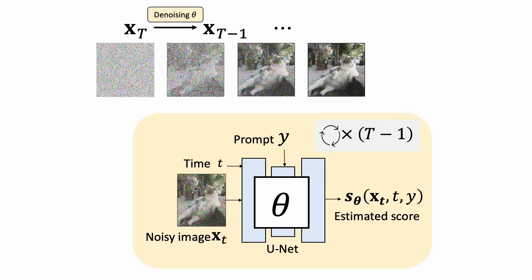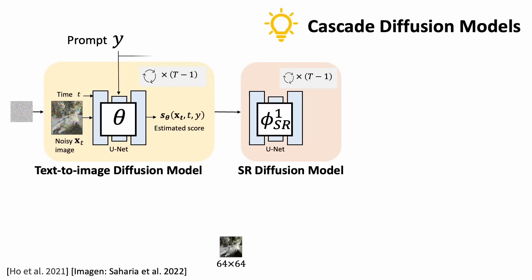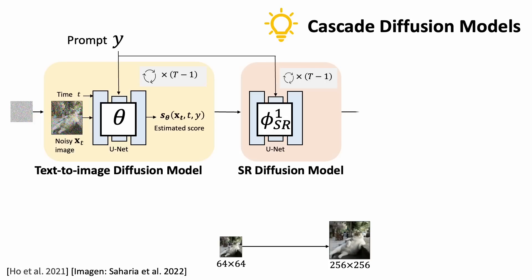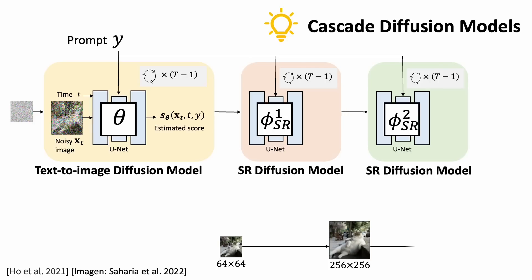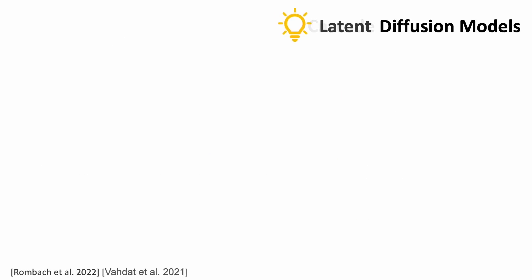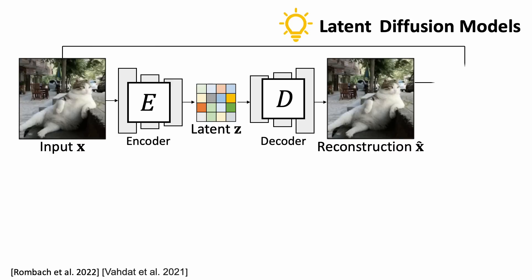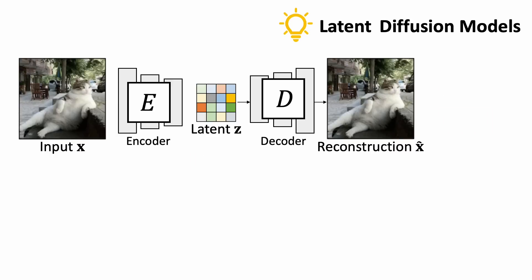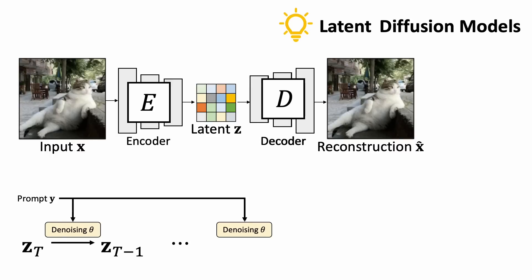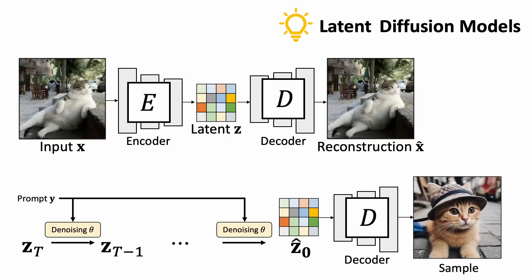But how do we generate high-resolution images? There are two popular methods. The first one is cascade diffusion — it generates a low-resolution image first, and then progressively upsamples it to a high-resolution image. The second one is latent diffusion, which compresses the image into a low-resolution latent using a variational autoencoder. This enables training a denoising network efficiently to generate a clean latent and decode it back to a high-resolution RGB image.